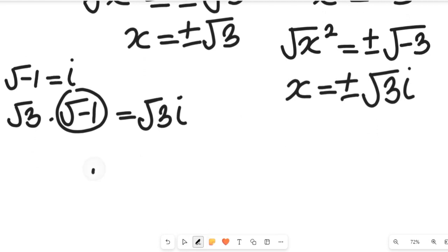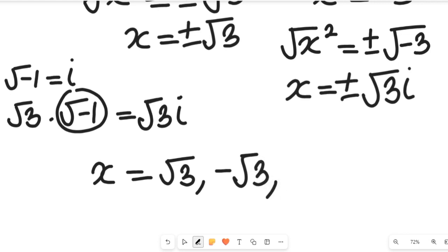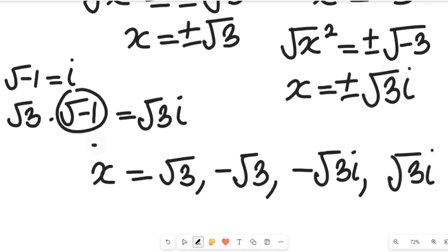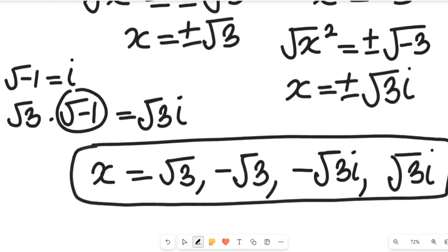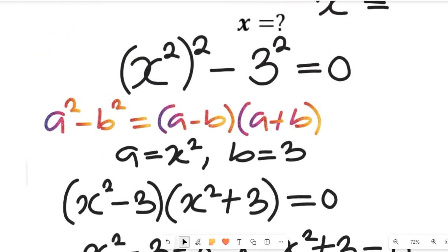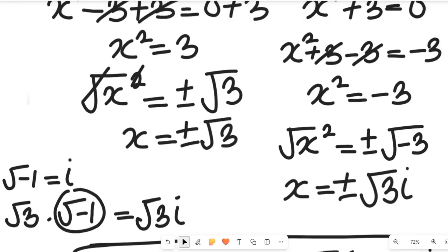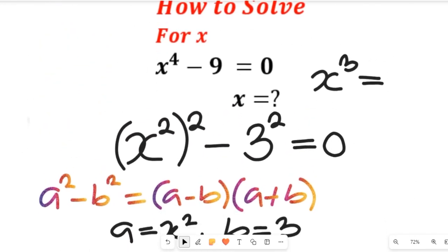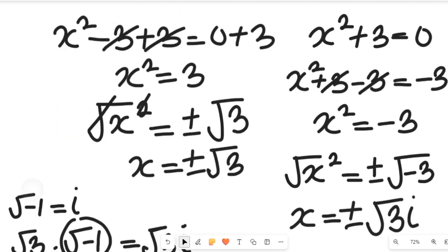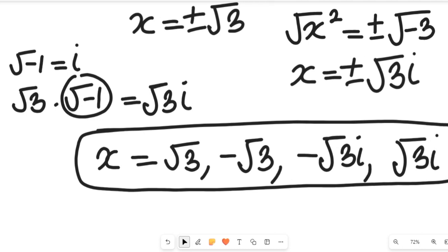So the solutions to our quadratic expression are: x equals the square root of three, x equals negative square root of three, x equals negative square root of three times i, and x equals square root of three times i. These are the four solutions to the exponential equation. Don't forget to give this video a thumbs up, share it with your friends and colleagues, and subscribe to my channel for more simplified mathematics solutions. Thanks so much for watching, bye bye for now.